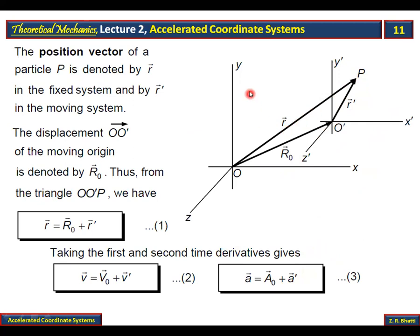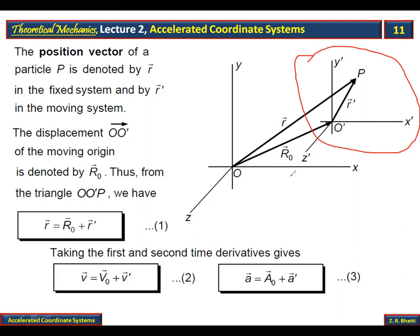This is a particle and its position vector is given in the fixed coordinate system. This is a coordinate system. I will explain that the position vector is called R. The particle has a position vector in the original coordinate system, and Newton's laws are applied in that system.